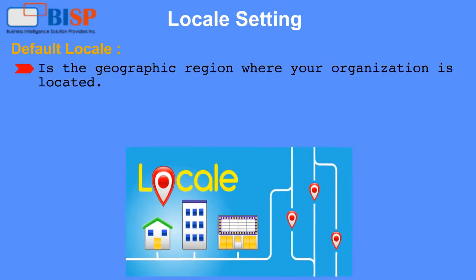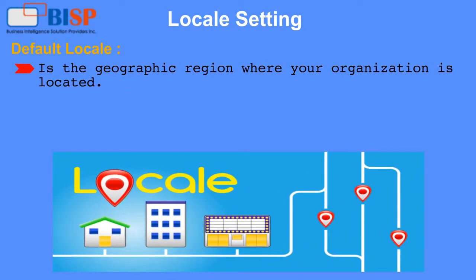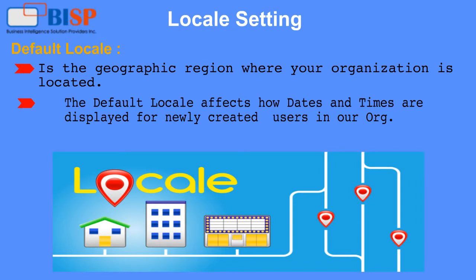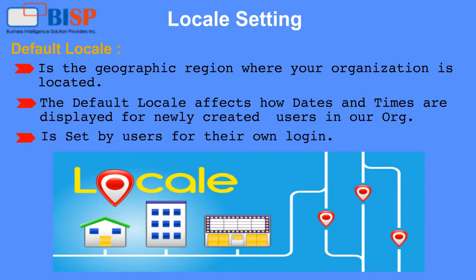Locale Setting — Default Locale: This is the geographic region where your organization is located. The default locale affects how dates and times are displayed for newly created users in your org, and is set by users for their own login.